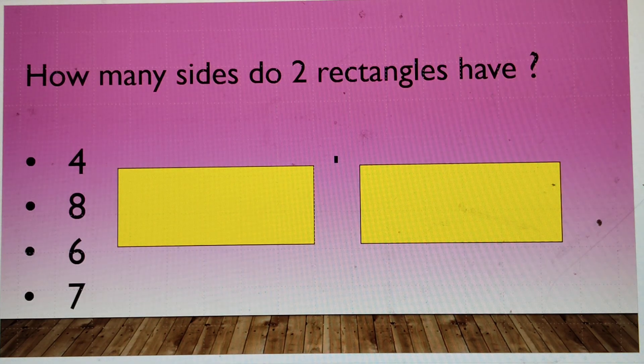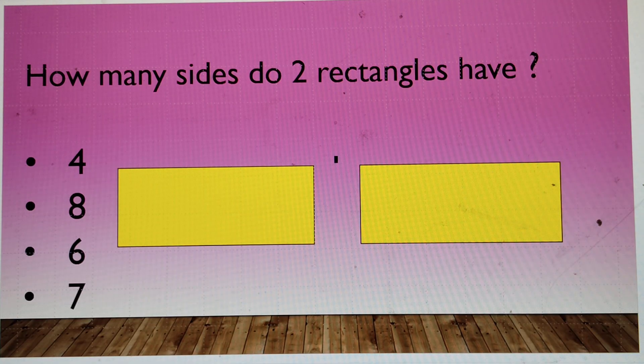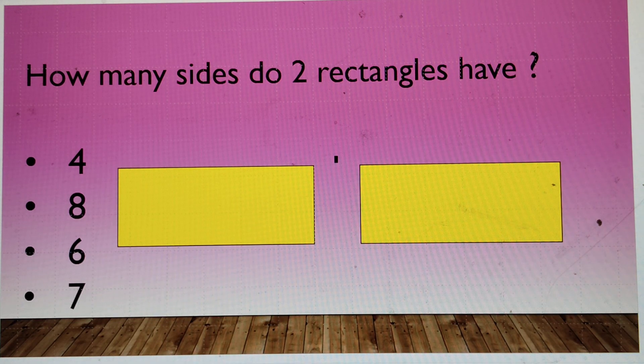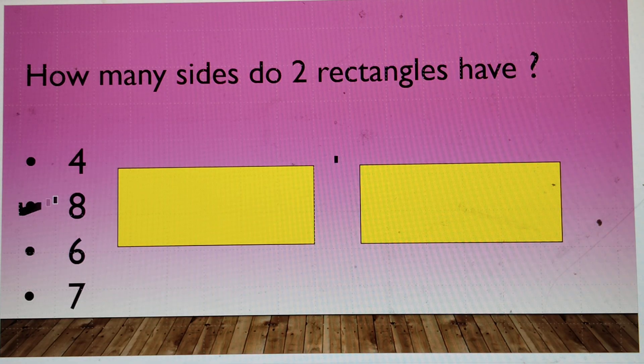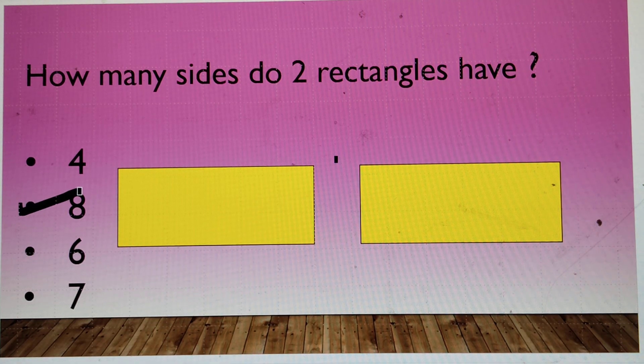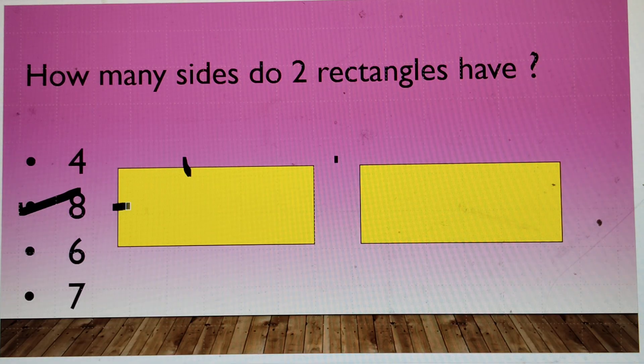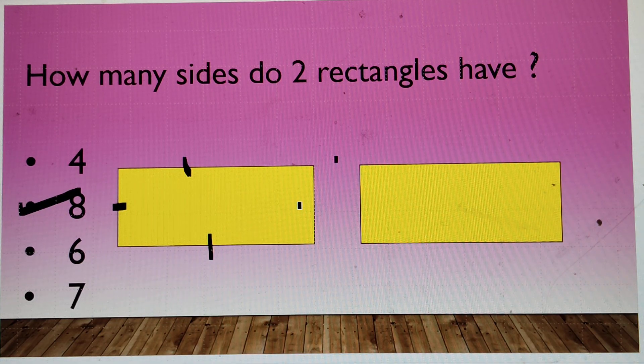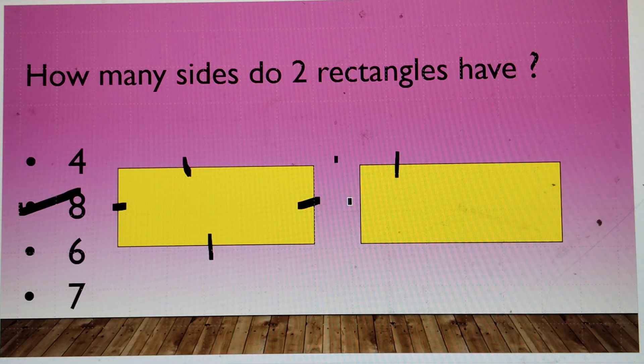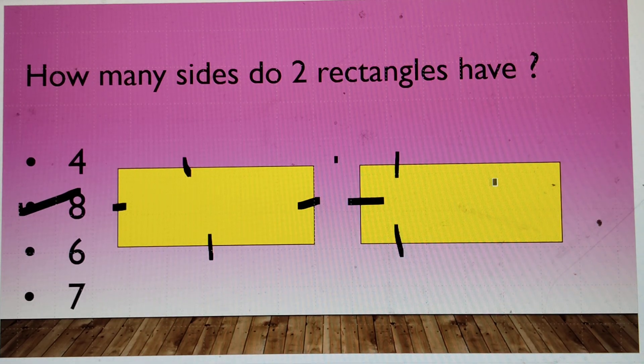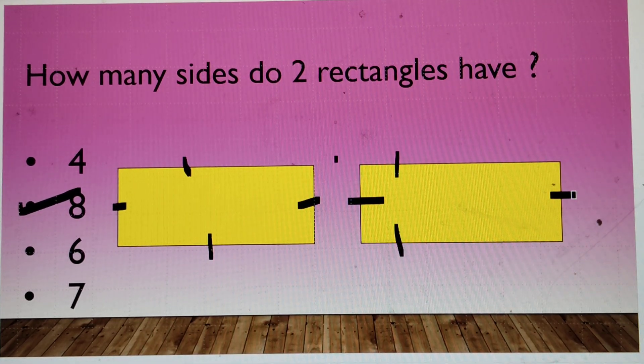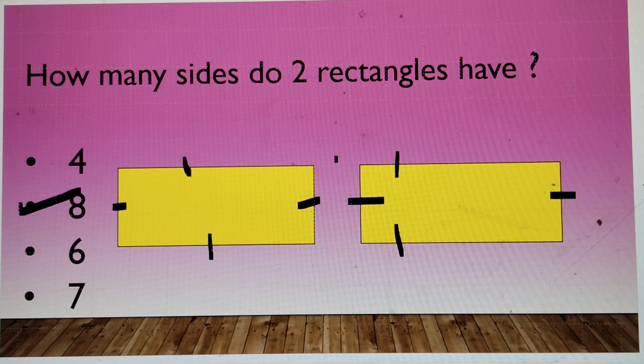How many sides do two rectangles have? 4, 8, 6 or 7? 4. No, it's 8 because I'm talking about two rectangles. Let's count. 1, 2, 3, 4, 5, 6, 7 and this is the 8th one. So, we will get 8 here.